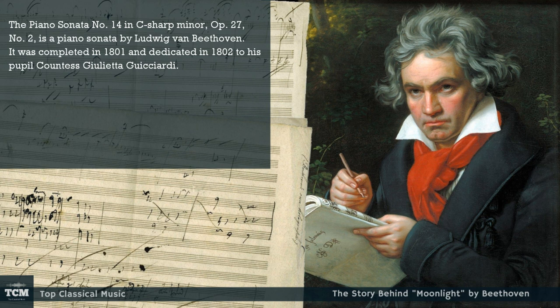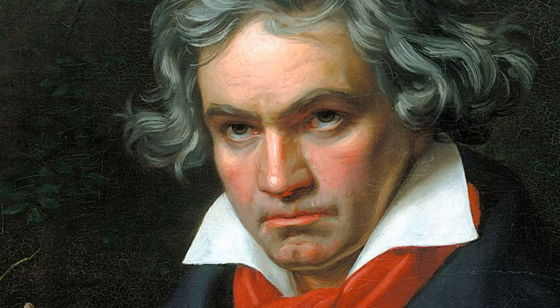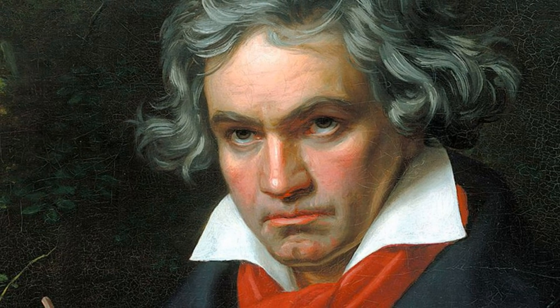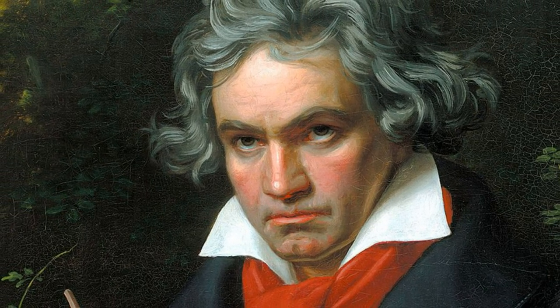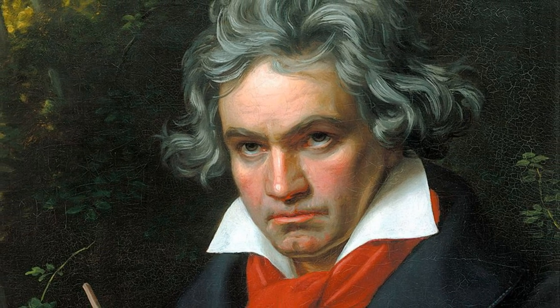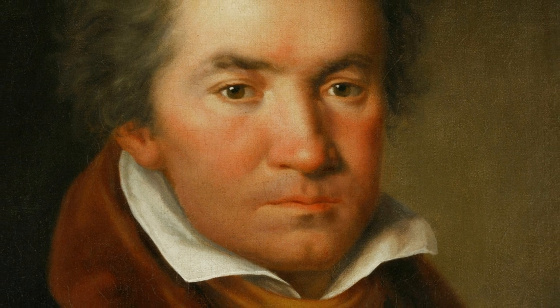The Piano Sonata No. 14 in C-sharp minor, op. 27, No. 2, is a piano sonata by Ludwig van Beethoven. It was completed in 1801 and dedicated in 1802 to his pupil Countess Giulietta Guicciardi. The piece is one of Beethoven's most popular compositions for the piano, and it was a popular favorite even in his own day.